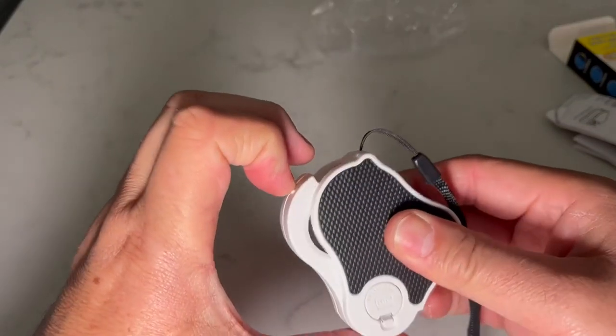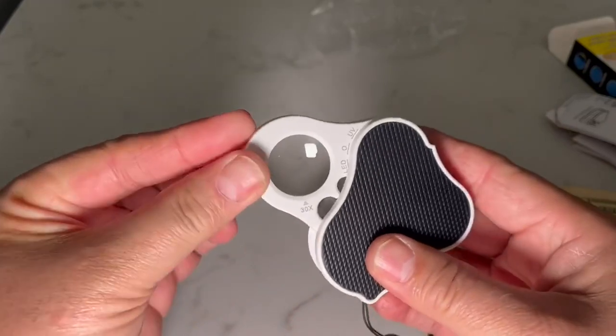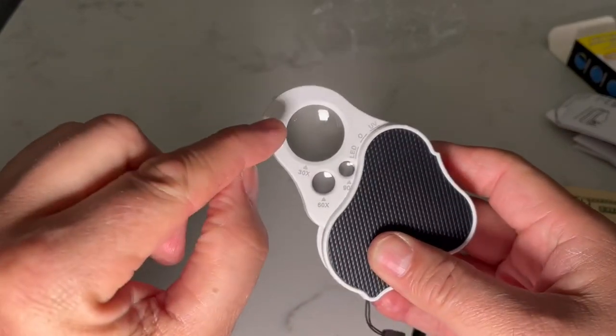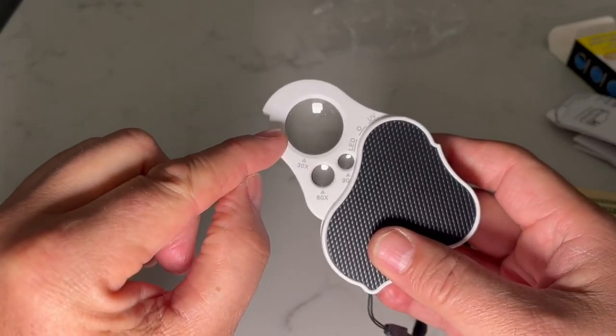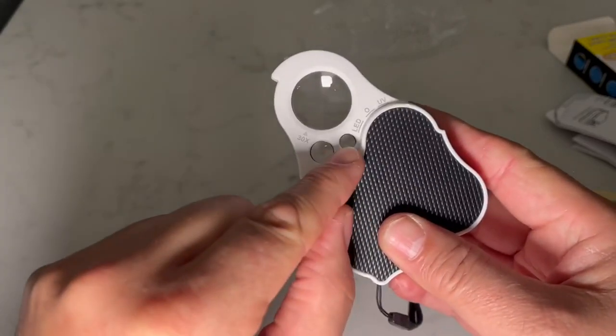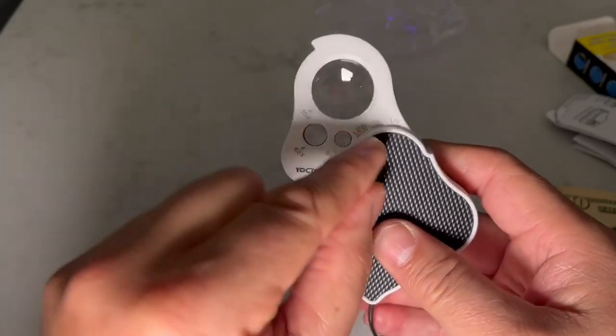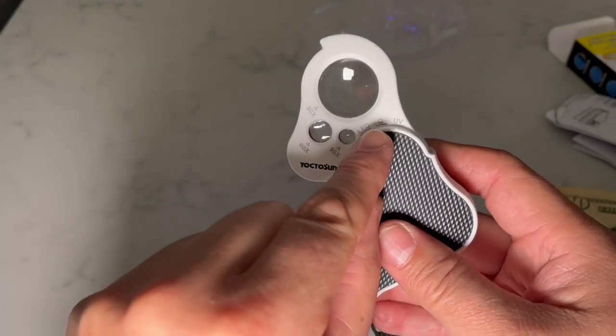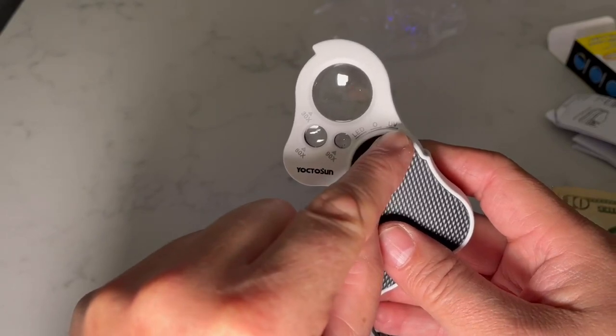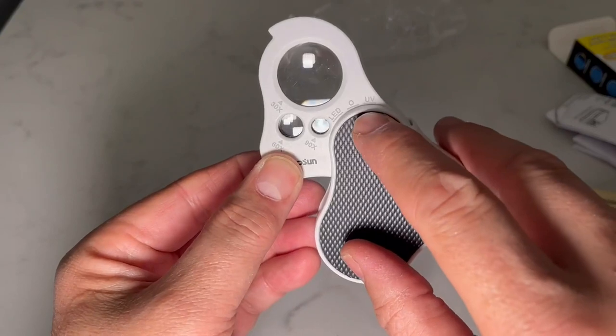All right, so it opens up this way. And as you can see, there's the 30 magnification, the 60 magnification, and the 90 magnification magnifying glasses. And it has a little indicator right here. It says LED, O for off, and then UV for ultraviolet. And the little marker is right here, right there, that would point to what light you have it on.